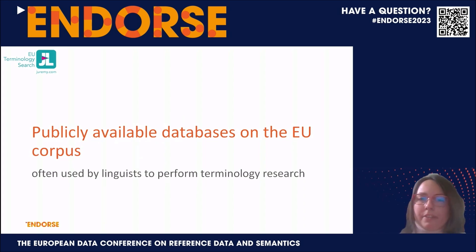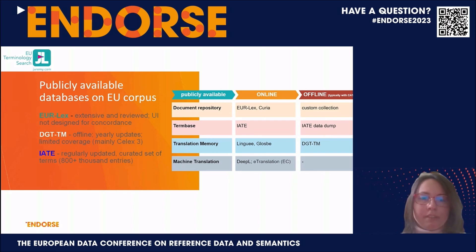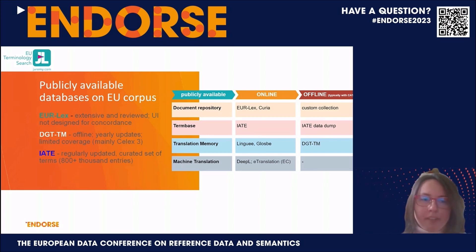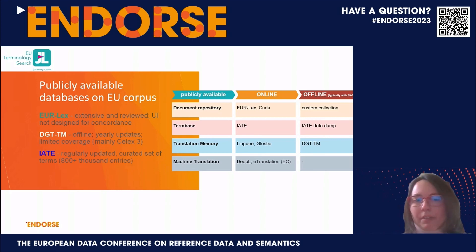To comply with these standards, linguists can access various EU open data datasets online. EURLEX is a document repository in 24 languages. DGTTM is an offline dataset of parallel segments, which covers mainly sector three — the legal acts document category on EURLEX. And for term bases, there is IATE, the Interactive Terminology for Europe, which is a regularly updated and curated set of terms.